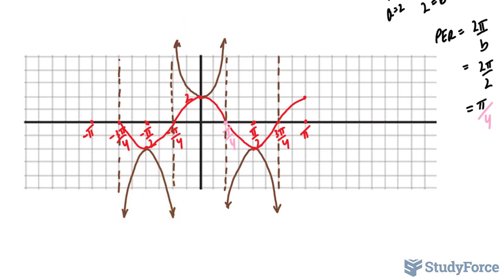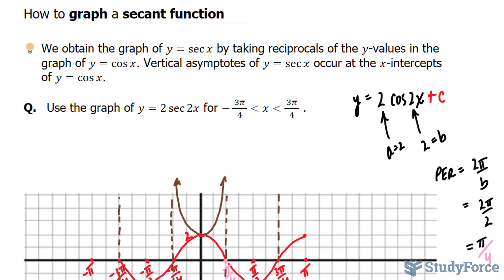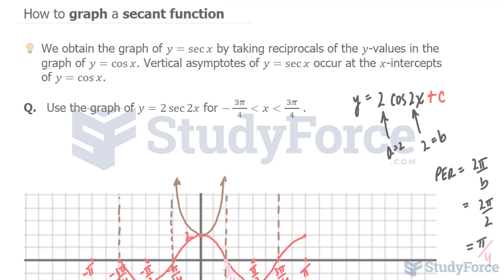What you see in brown represents the graph of 2 secant 2x. And there you have it. That is how to graph a secant function.